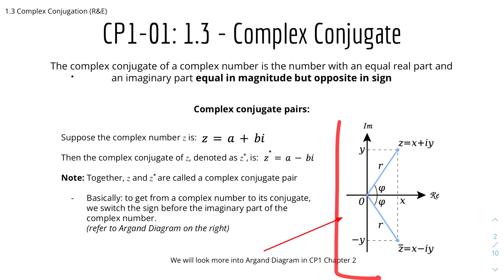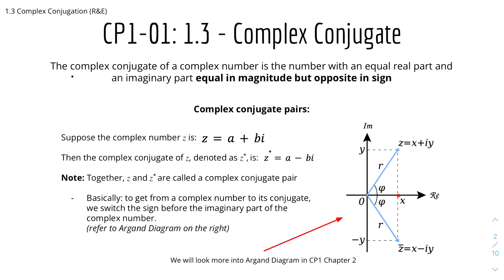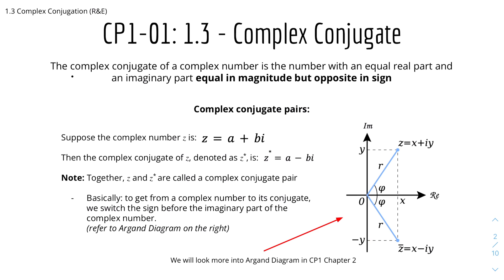Here we have an Argand diagram on the right. Don't worry about this because we look into Argand diagrams in chapter 2 for core further maths — this is just a little introduction. The Argand diagram shows the real axis and the imaginary axis, basically an x and y plane. So z = x + iy, and its complex conjugate is x - iy. As you can see, the x is the same but the y is opposite, so it's basically a reflection in the real axis.